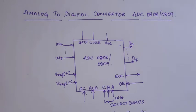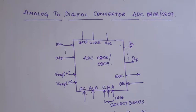So you give that digital data as input to the processor, do some processing, and accordingly give output. The processor's digital output again has to be converted from digital to analog, and then you can control the parameters.